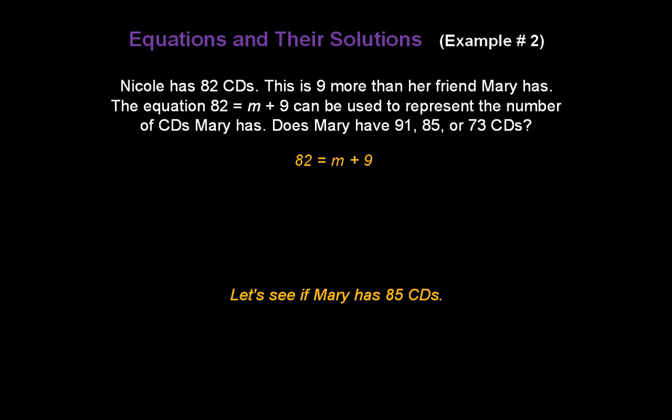Let's see if Mary has 85 CDs. Go ahead and replace m with 85. Does 82 equal 85 plus 9? Solve the right-hand side. Does 82 equal 94? Obviously not again. 82 does not equal 94. So Mary does not have 85 CDs either.